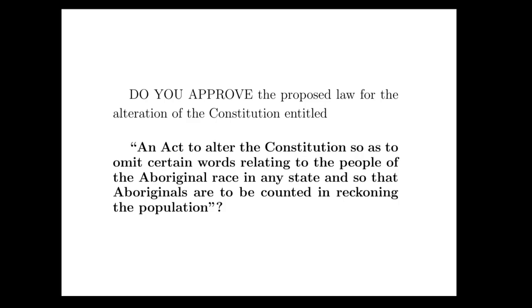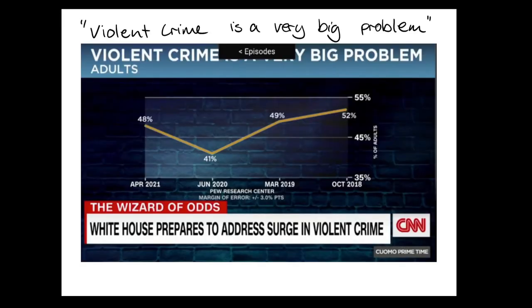We have a mailbag segment on this podcast. Today we're going to be talking about a chart that several people showed to me back in June. This is from a CNN news story in June. The headline of this particular slide is 'violent crime is a very big problem.' This came from a segment on violent crime — an alleged spike in violent crime rates in US cities, particularly New York and Chicago. But there are a few problems with this particular chart being used for that argument.